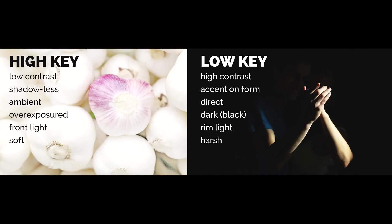Look at the picture to the left. First of all, it is very very bright. It has a low contrast between the lit areas and the dark areas. It is almost shadowless and the lighting is very soft and ambient. And the picture is overexposed. That is high-key lighting.